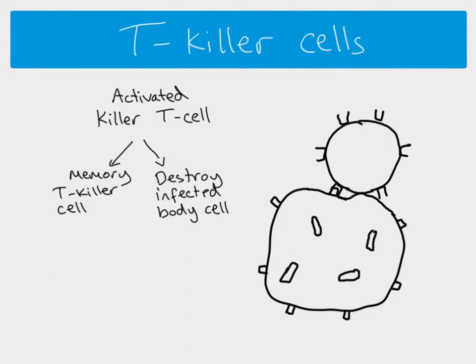Inside the T killer cell are vesicles containing hydrolytic enzymes. These vesicles move towards the cell surface membrane, fuse with it, and release their contents into the host cell. This means the T killer cell is destroying one of our own body cells, but it's worth it in order to destroy the pathogen at the same time. Various toxins are released - hydrogen peroxide is one of the chemicals that can be released to destroy the host cell.